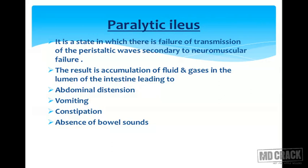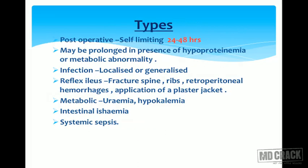Paralytic ileus is the state in which there is failure of transmission of peristaltic waves secondary to neuromuscular failure. The result is accumulation of fluid and gas in the lumen of the intestine, leading to abdominal distension, vomiting, constipation, and absence of bowel sounds. Post-operative paralytic ileus can be self-limiting, lasting 24–48 hours, but may be prolonged in the presence of hypoproteinemia or metabolic abnormality.